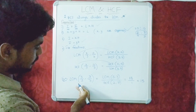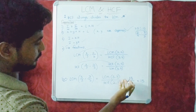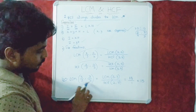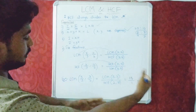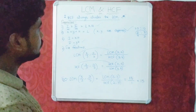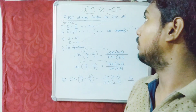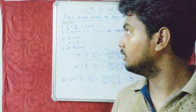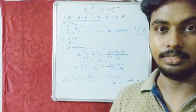For example, LCM of 5/2 and 3/7: LCM of numerators 5 and 3 is 15, and HCF of denominators 2 and 7 is 1, so the LCM of these fractions is 15/1 = 15. These are some important formulae on LCM and HCF. We will discuss more problems on this topic in the next sessions. Thank you.